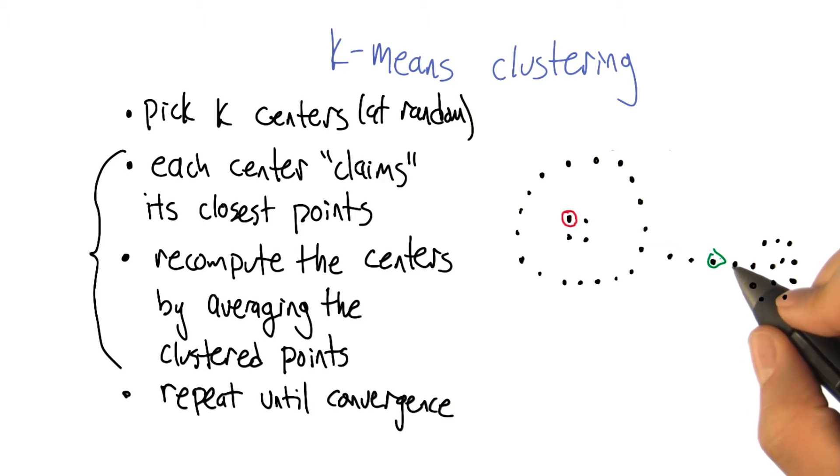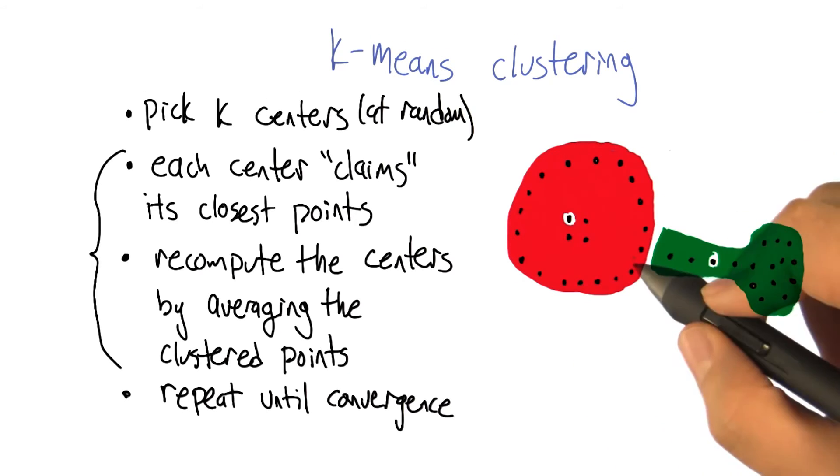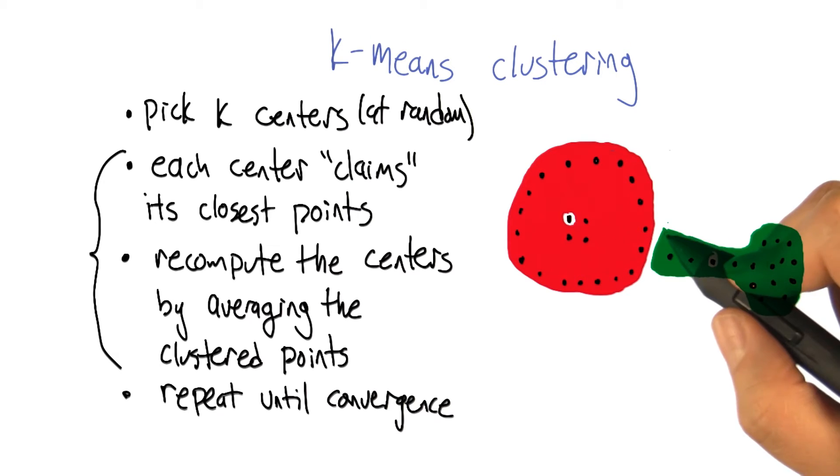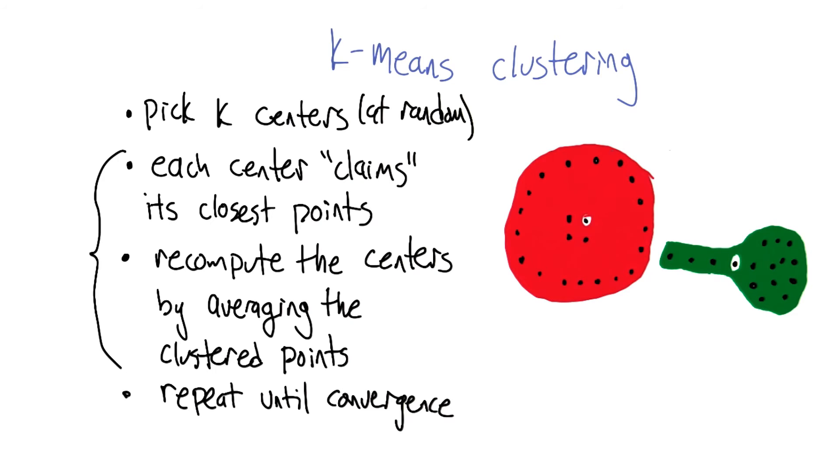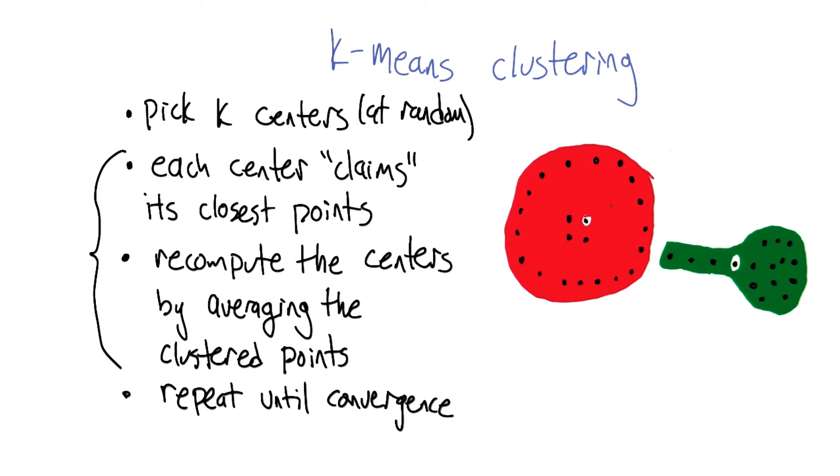But now we can repeat this process. We can say, okay, now everybody join the group that you're closest to. And one nice thing that happened now is that the group of points on the left all joined together in red and this sort of weird hammery thing on the right became green. And now we're going to recompute our centers again. Where's the center of the clusters given the way that they've been painted? And that again moved things a little bit to the right in both cases. We ask every point to join the team that they're closest to, and we get that. And that actually turns out to be exactly the same clustering that we had a moment ago. So when we recompute the centers they remain unchanged. And so we've converged.